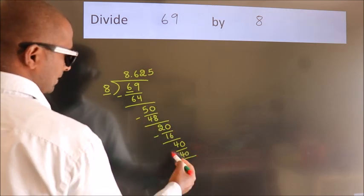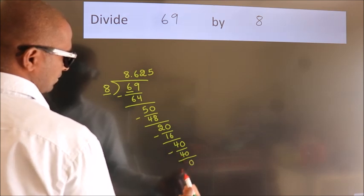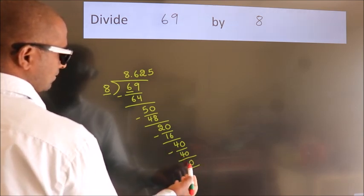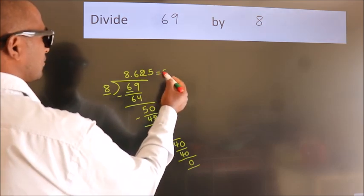Now we subtract. We get 0. Here we got remainder 0, so this is our quotient.